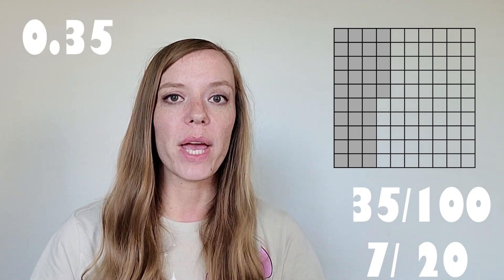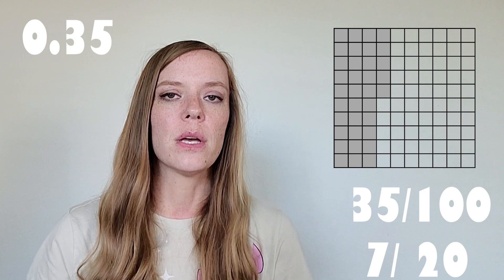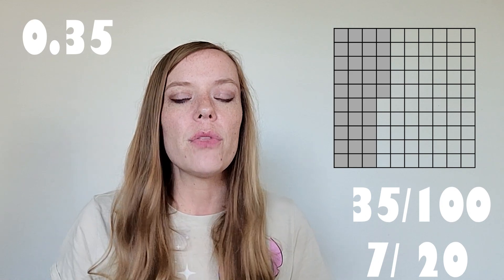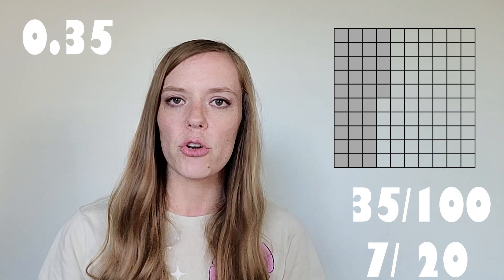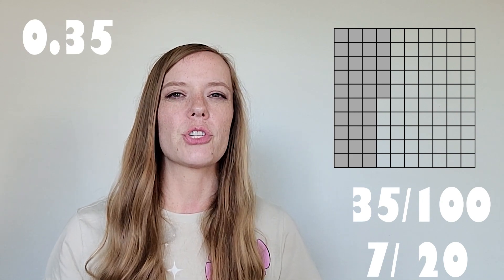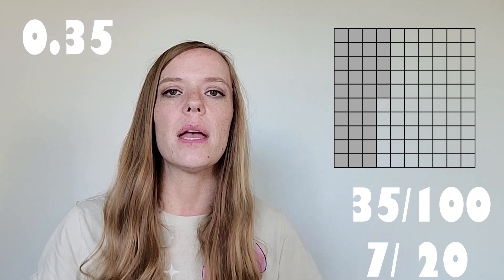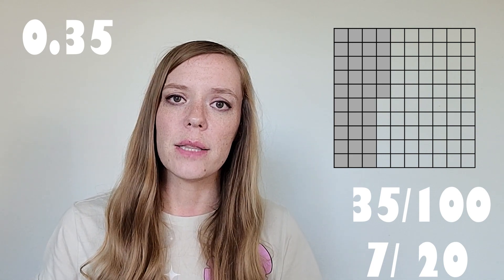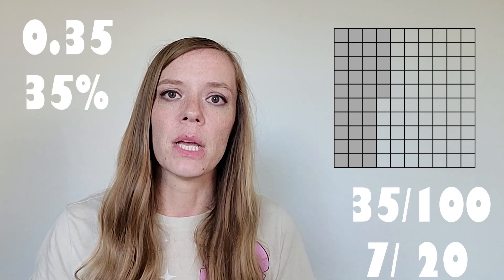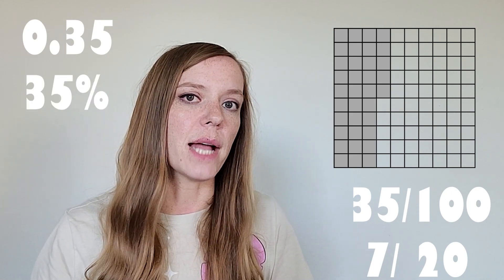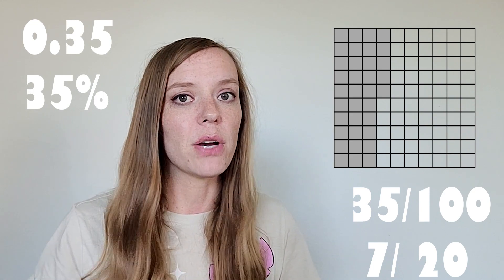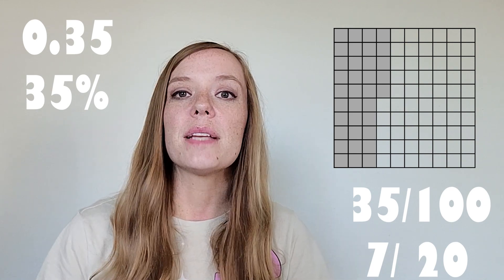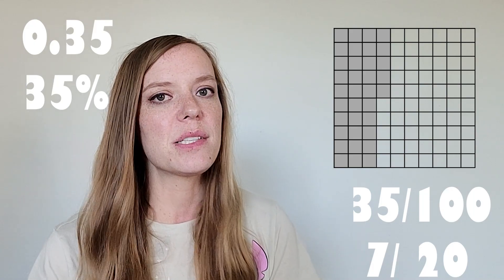So one of my favorite ways to think about percents is just with something really familiar to you, which is a grade that you might get in a class. So you know that if you get it completely correct, you get a 100%. And that would be like the fraction 100 out of 100. But if you got 35 correct out of a hundred, that would be like a 35%. The other thing that's awesome is that when you look at that decimal 0.35 or 35 hundredths, the percent is just the same number. So 35%.